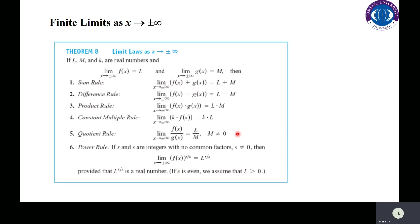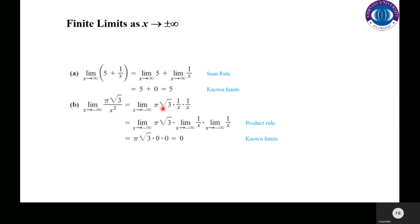These are the laws for limits at infinity — exactly the same as the laws you learned for finite limits. For example, the limit as x approaches infinity of (5 + 1/x): here we have two functions in addition, so we can apply the limit separately. The constant 5 remains as is, and the limit of 1/x as x approaches infinity is 0. So the result is 5.